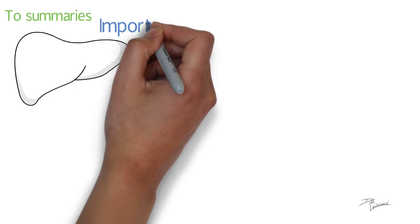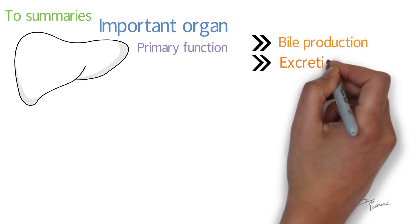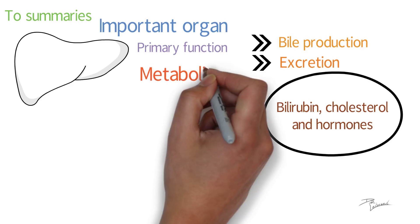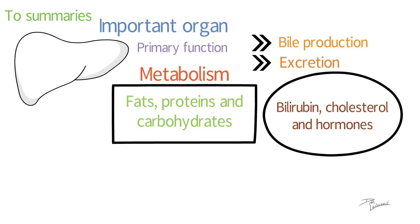To summarize, the liver is an important organ in our body, which has primary functions for bile production and excretion, excretion of bilirubin, cholesterol, and hormones. Metabolism of fats, proteins, and carbohydrates are also processed in the liver. The liver also is responsible for processing glucose through a very important mechanism known as gluconeogenesis.